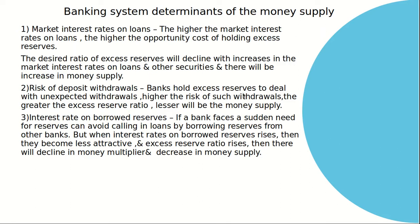Second is risk of deposit withdrawals. Banks hold excess reserves to deal with unexpected withdrawals. Higher the risk of such withdrawals, greater is the excess reserves held by the bank, greater is the excess reserve ratio, and lesser will be the money supply. Third, interest rates on borrowed reserves: when banks face a sudden need for reserves, they can borrow reserves from other banks. When interest rates on these borrowed reserves rise, borrowing becomes less attractive, excess reserve ratio rises, money multiplier declines, and money supply decreases.